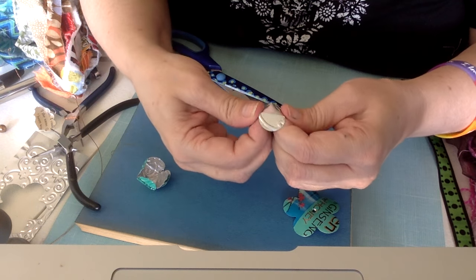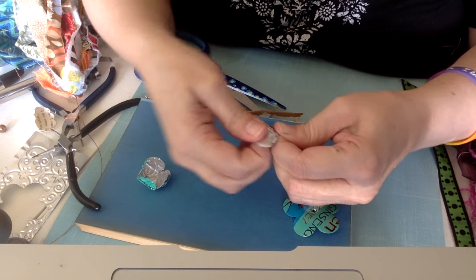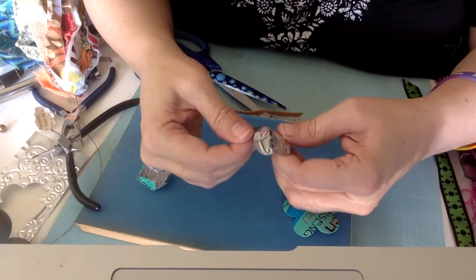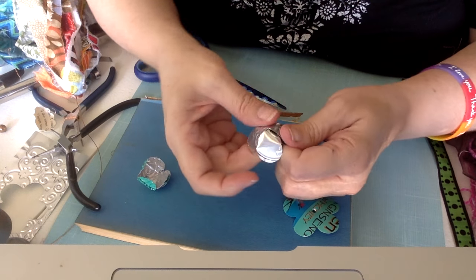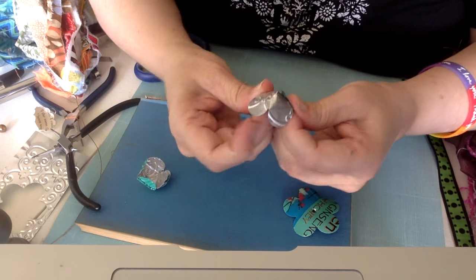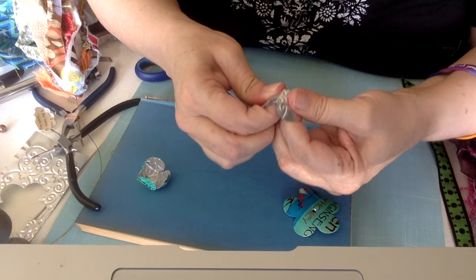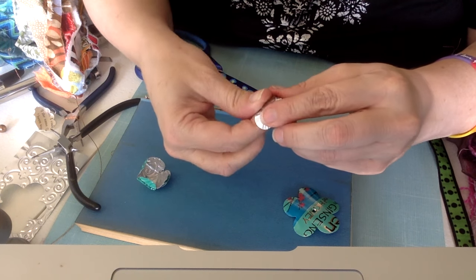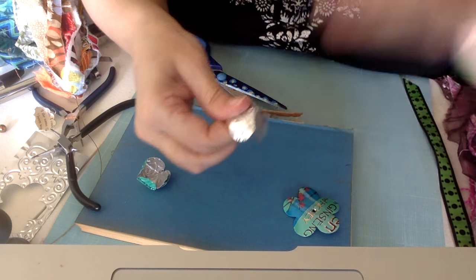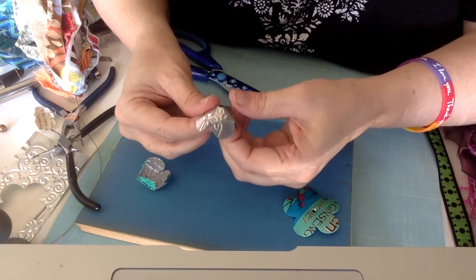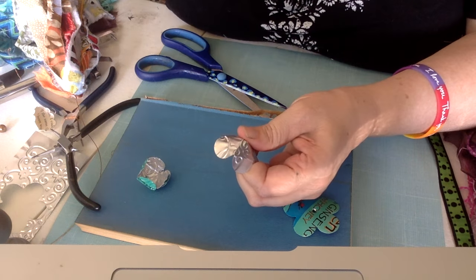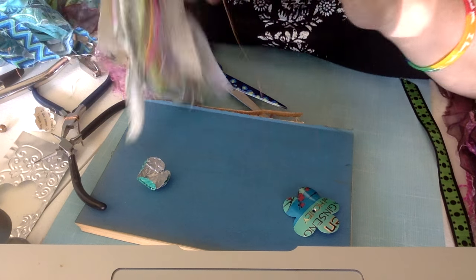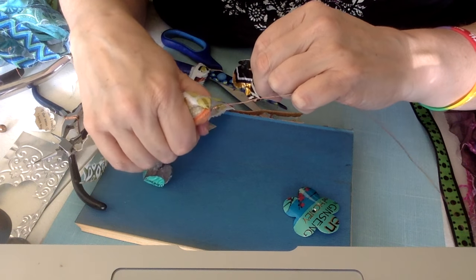So you just want to be gentle with it, remembering that it's just tin and keep working with it until you get the desired shape you like. You also need to make your bead cap wide enough to fit the top of your fabric, like wide enough to fit the top of this part of your fabric.